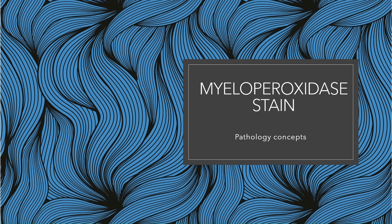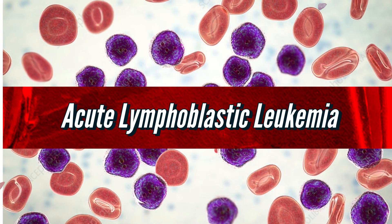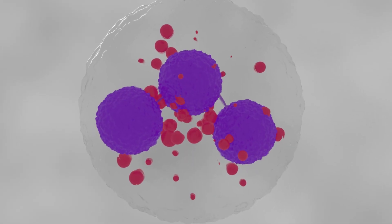Hello and welcome everyone. Today we are learning about myeloperoxidase stain. It is a special stain used to differentiate between acute myelogenous or monocytic leukemia from acute lymphoblastic leukemia. Myeloperoxidase is present in the primary azurophilic granules of neutrophils, eosinophils, and monocytes.